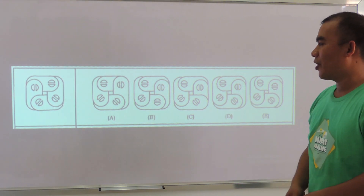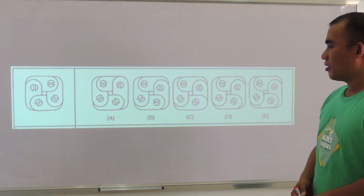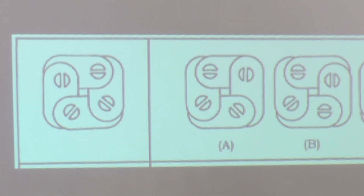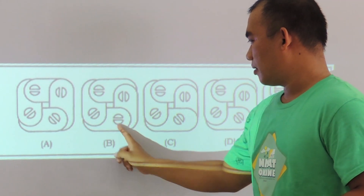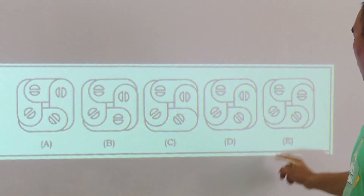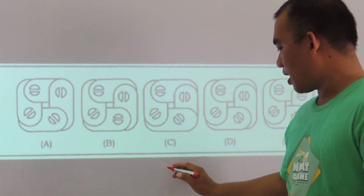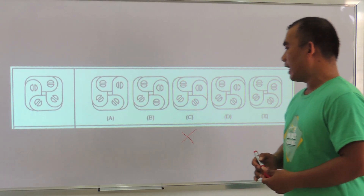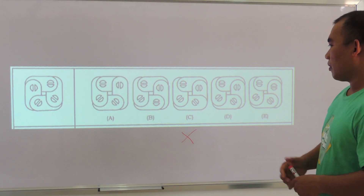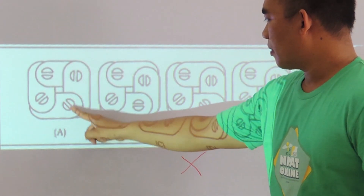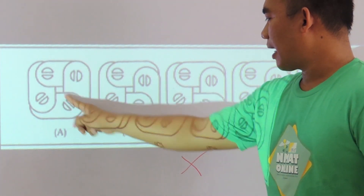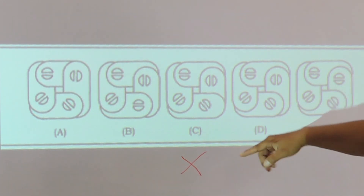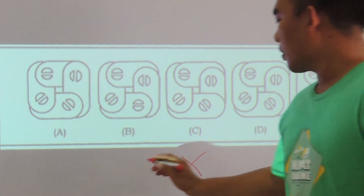We are now on the last example for the mirror image test. Again, we are going to apply the process of elimination. Focusing on the lower right side of the figure, we would eliminate option C. Next, focusing on another part — this is diagonal, this is horizontal, diagonal, diagonal — so I will eliminate option B.